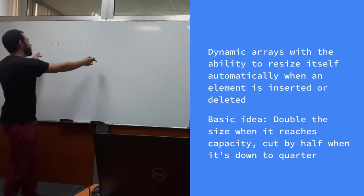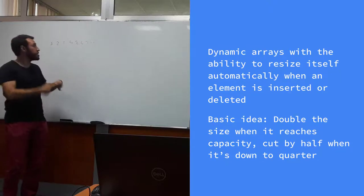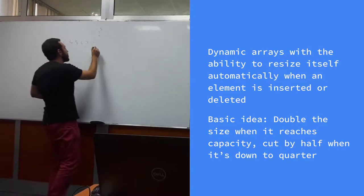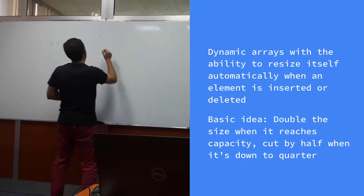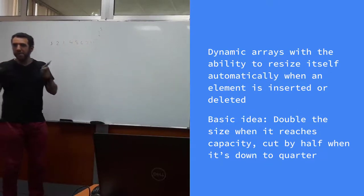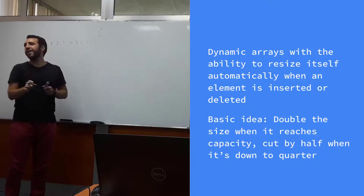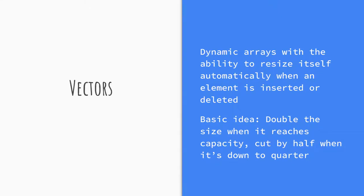Whenever we place an element over capacity, we double the size. For example, if our initial size is eight and we want to insert element 13, a new array of double the size is allocated and all existing elements are copied. Implementation details vary slightly across languages — they have more efficient ways of handling scale operations — but the basic idea is very similar. The exact thresholds may differ by language, but the concept is the same.